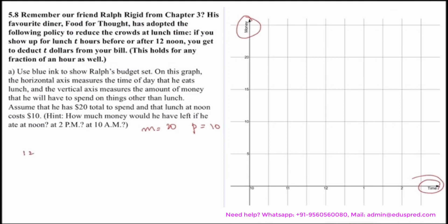At noon, his lunch costs him $10. So money he is left for other stuff would be 20 minus 10 equals 10, giving you the combination as (12, 10). This time is on the x-axis and money is on the y-axis.